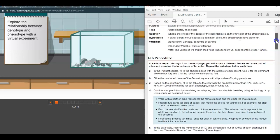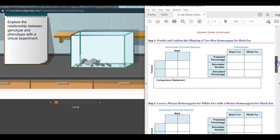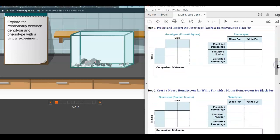The first part of this guide has a lab procedure, and that's if we were doing it in class. Obviously, we are not in class, so you can go ahead and jump to where it has step one. The first part says predict and confirm the offspring of two mice homozygous for black fur.